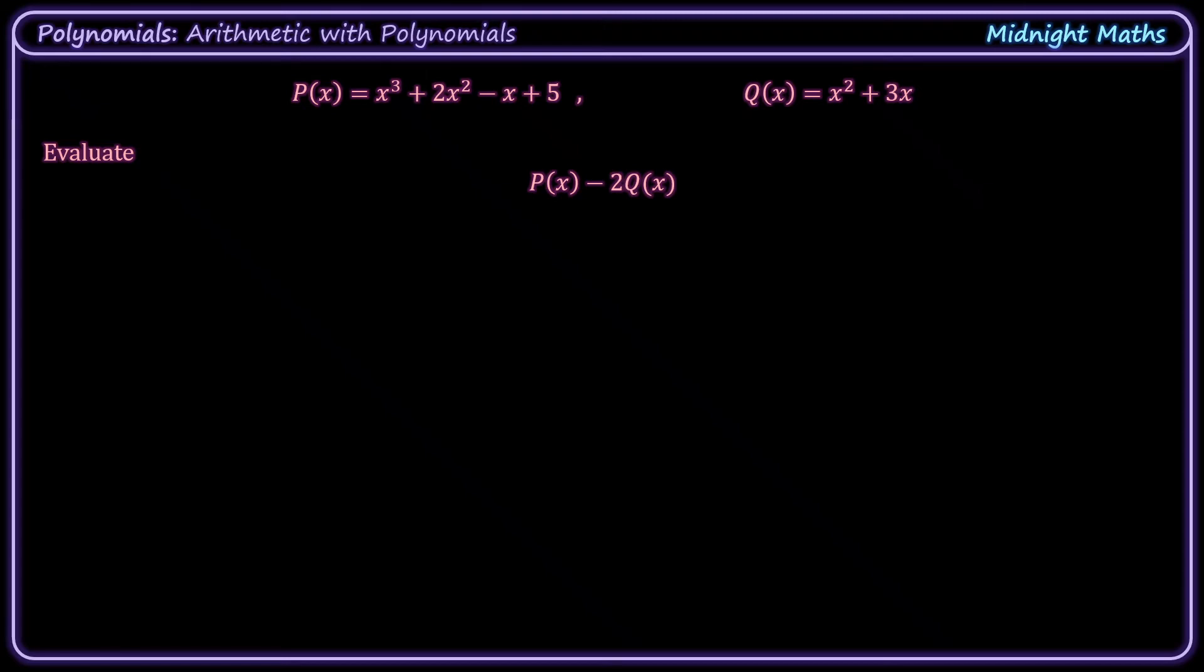In this question, we're doing P(x) minus 2Q(x), so we're doing subtraction of polynomials, and we're also multiplying one of the polynomials by a constant.